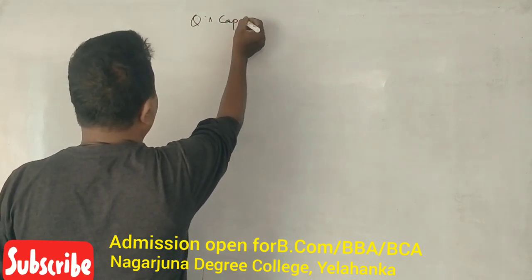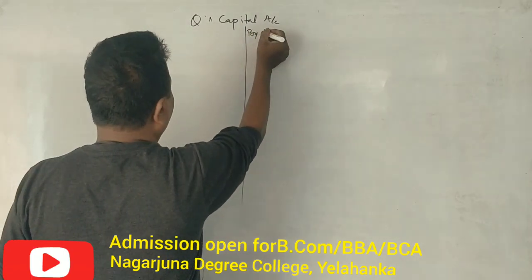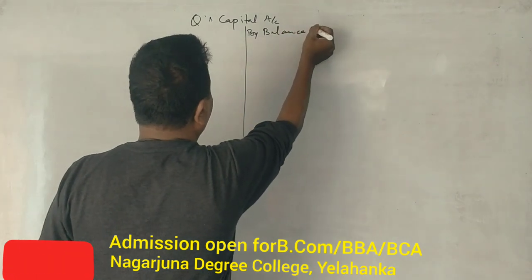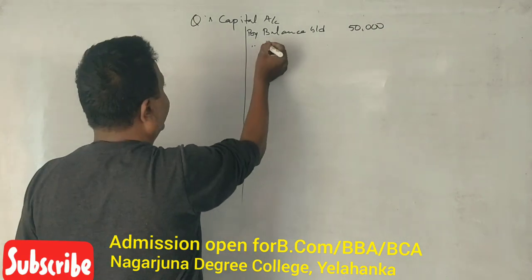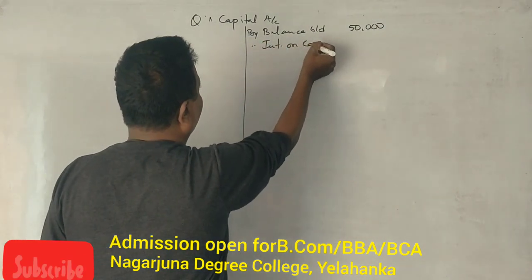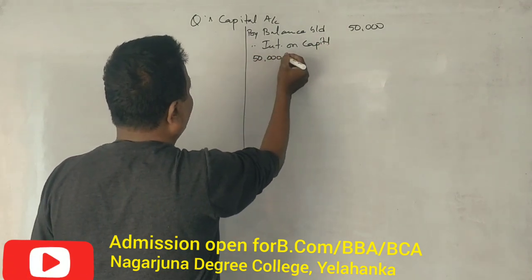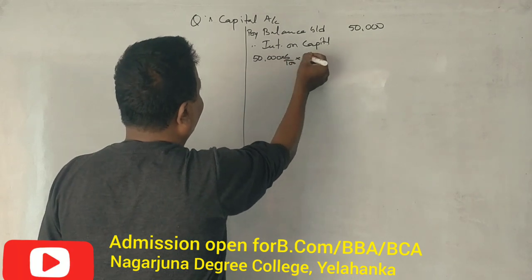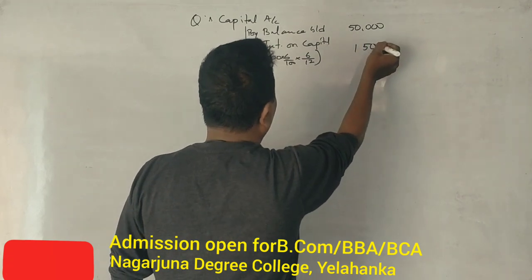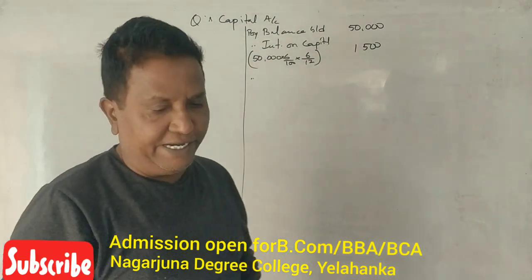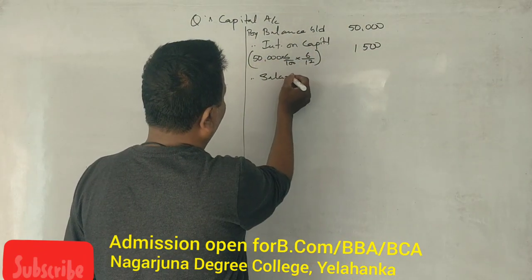So the first thing is Q's capital account. The capital is 50,000. Interest on capital is 6% on 50,000, which comes to 3,000.